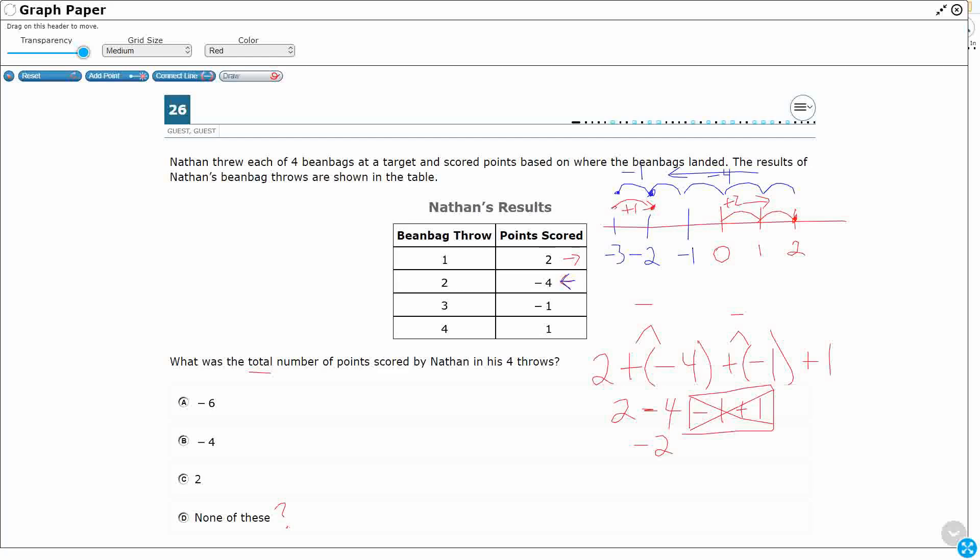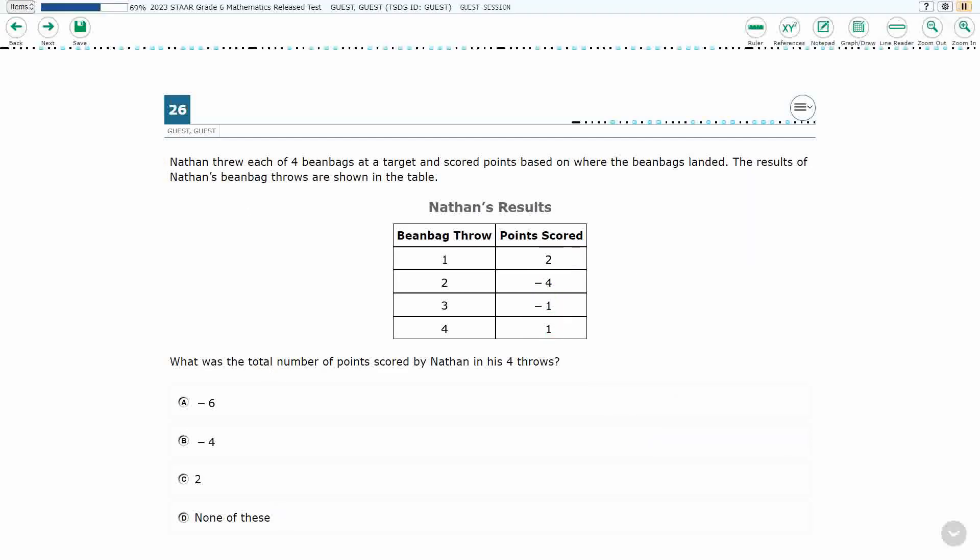You can also visualize it like this. You can put positive in the red. So I've got 1, 2, and I've got 3 positive right here. Then you can put negative in the blue. I've got 1, 2, 3, 4, 5. That's 5 right there. Then you just cancel out. You see how those positive 3 cancel out those negative 3. And I'm left with 2 negatives left. So either way you look at it, our answer is negative 2, and it's not there.